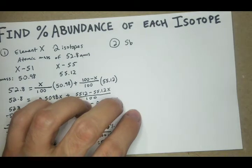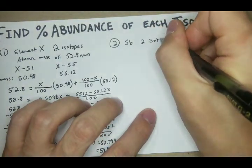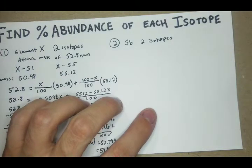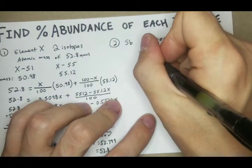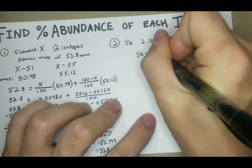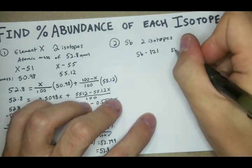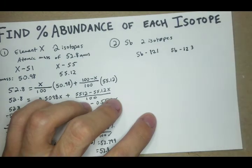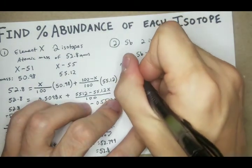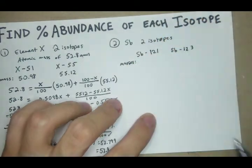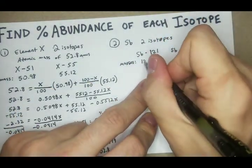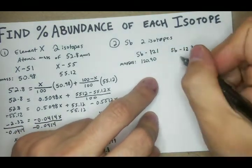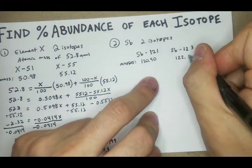has two isotopes. We have Sb-121 and Sb-123. The masses are going to be, for the 121, 120.9, and the other one is going to be 122.90.